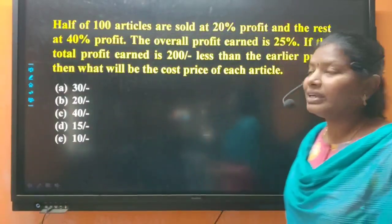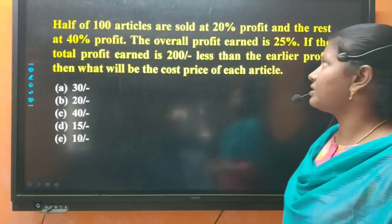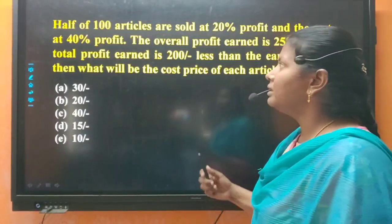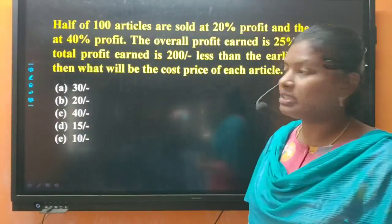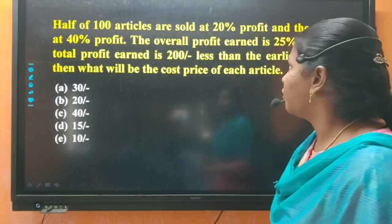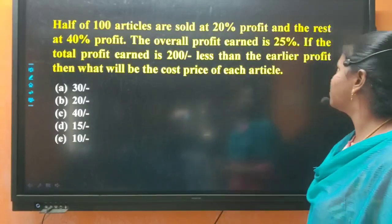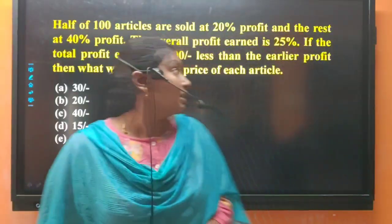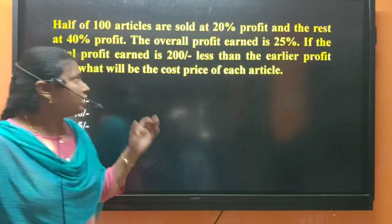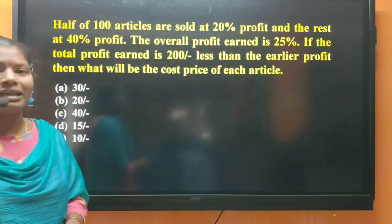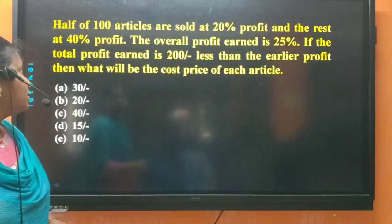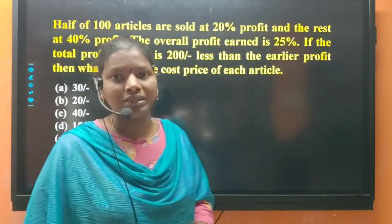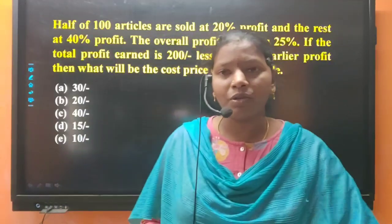Half of 100 articles are sold at 20% profit and the rest are sold at 40% profit. The overall profit earned is 25%. If the total profit earned is 200 rupees less than the earlier profit, what will be the cost price of each article?